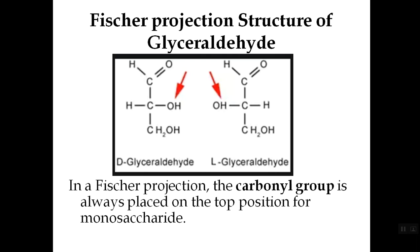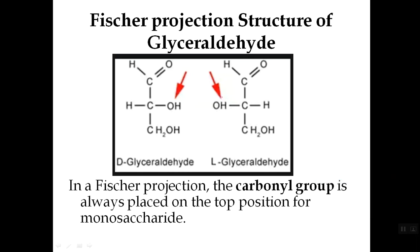This is the D-glyceraldehyde structure and the L-glyceraldehyde structure shown as Fischer projection structures. This is an open-chain structure. In Fischer projection, the carbonyl group is always placed on the top position of the monosaccharide. In glyceraldehyde, the carbonyl group is the aldehyde, and it is present on the top position.